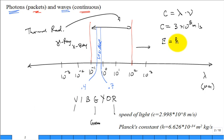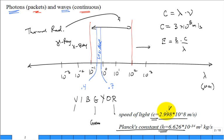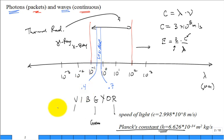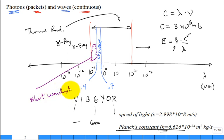The energy associated with an electromagnetic photon is described as h times c divided by lambda, where h is Planck's constant and c is the speed of light. Energy is proportional to one over wavelength, so short wavelength means high energy. That's the main takeaway.